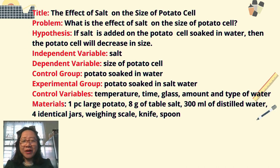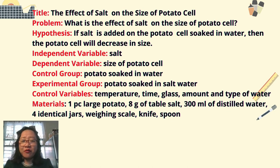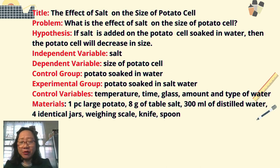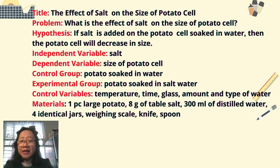Now identify the materials that you will use in your experiment. You may use: one piece large potato, 8 grams of table salt, 300 ml of distilled water, 4 identical jars, a weighing scale, knife, and spoon.